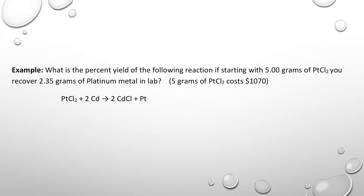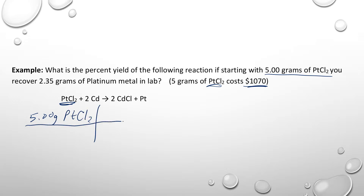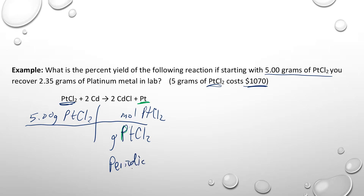Now here's why you should care about percent yield. Platinum chloride contains platinum, so 5 grams of platinum chloride costs $1,000. You want to extract the platinum from it. We'll convert platinum chloride grams into moles: platinum is 195 and chlorine is 35.5 times 2, giving us 266 grams per one mole of platinum chloride.